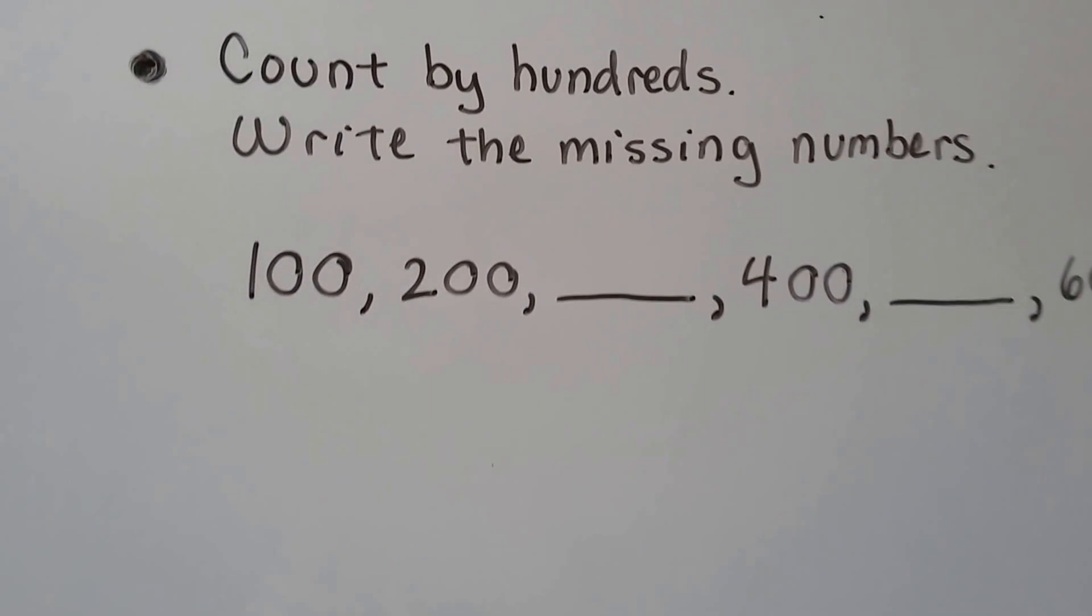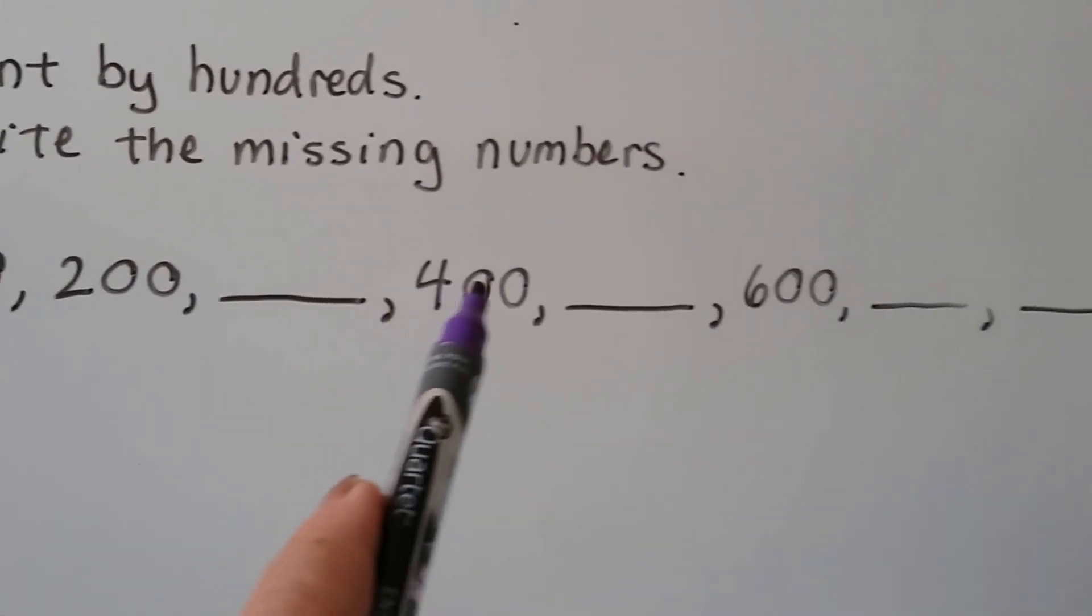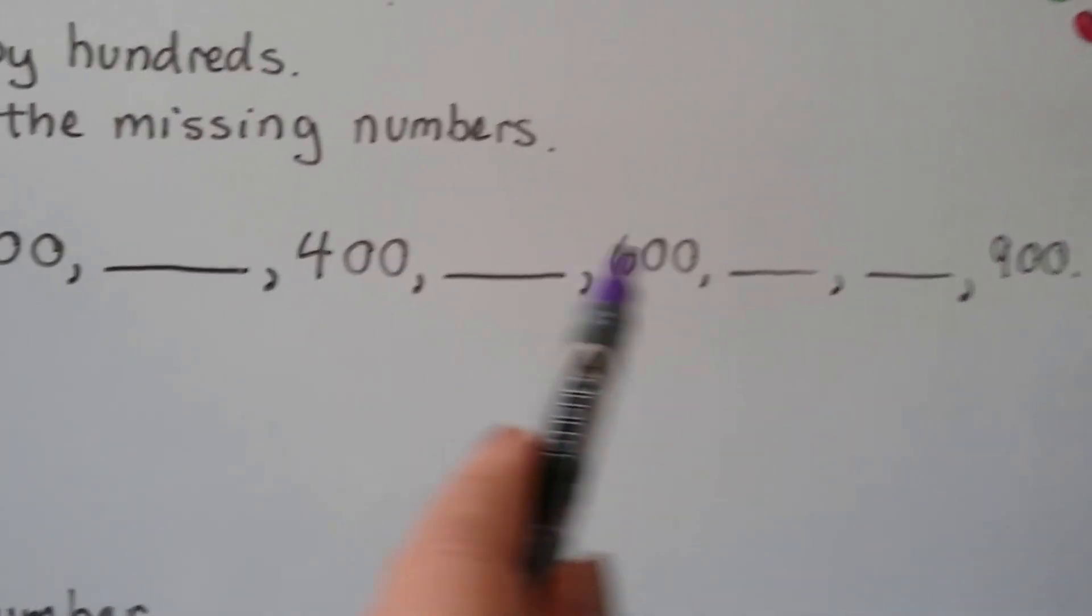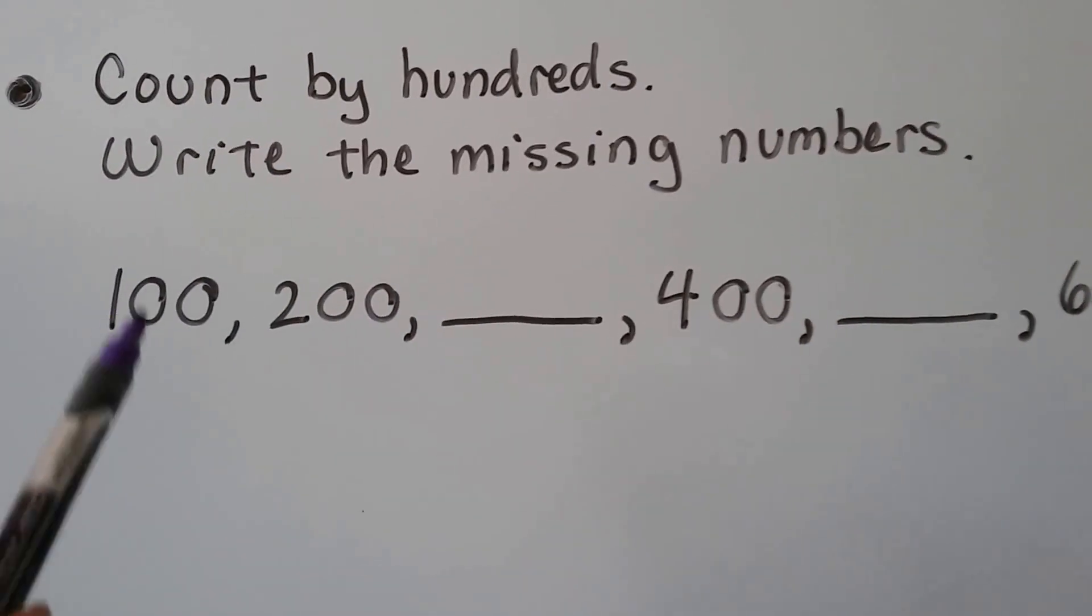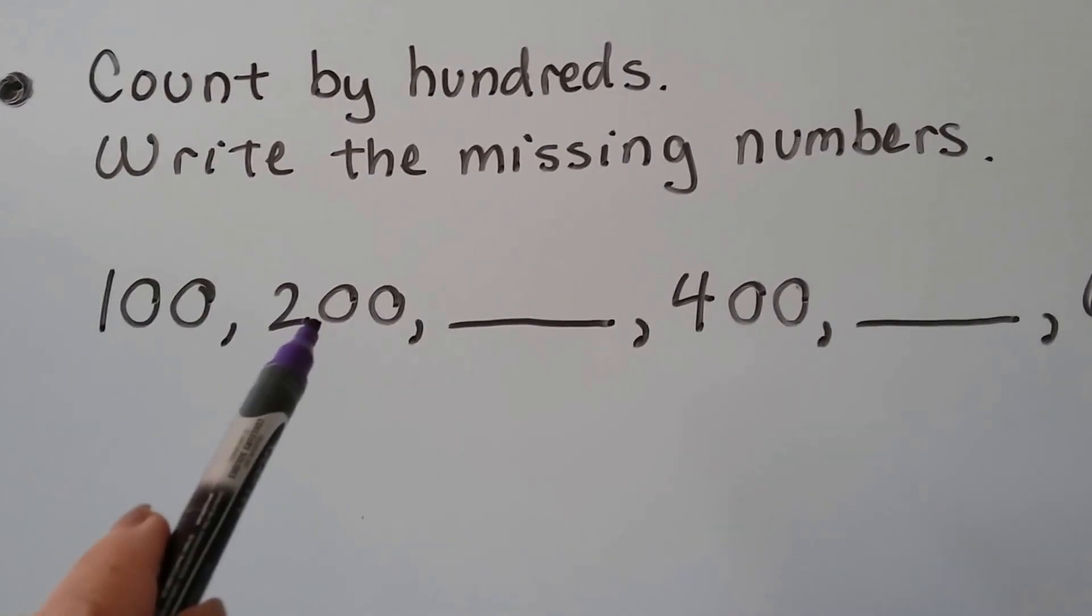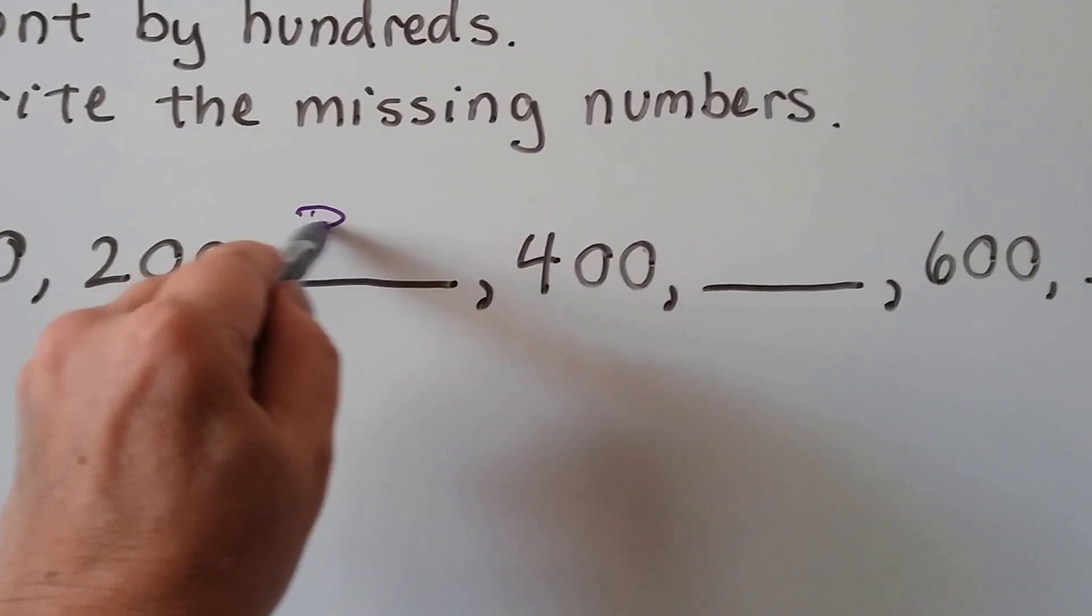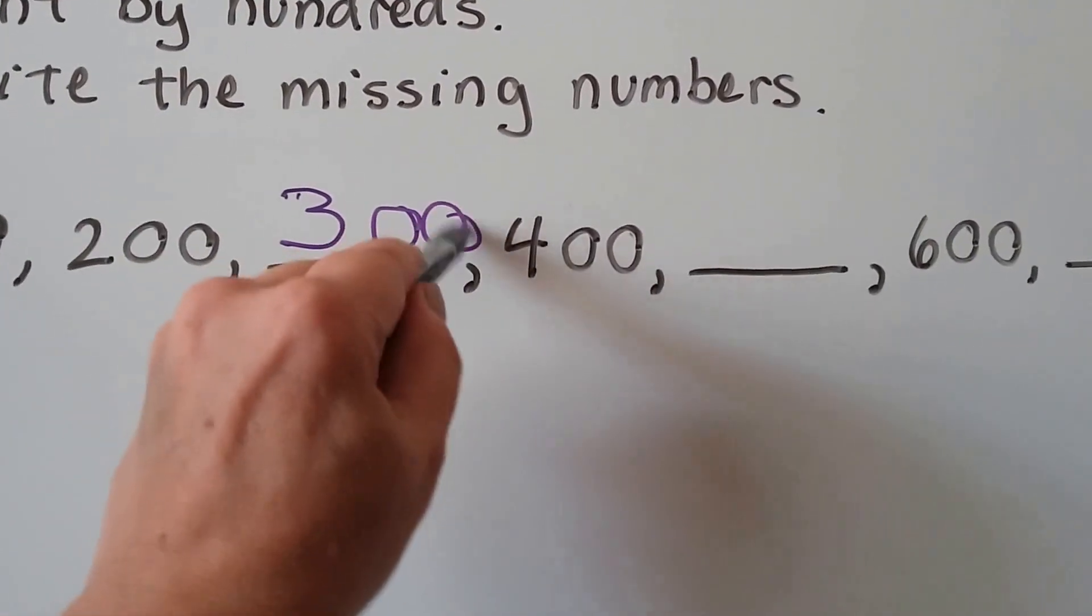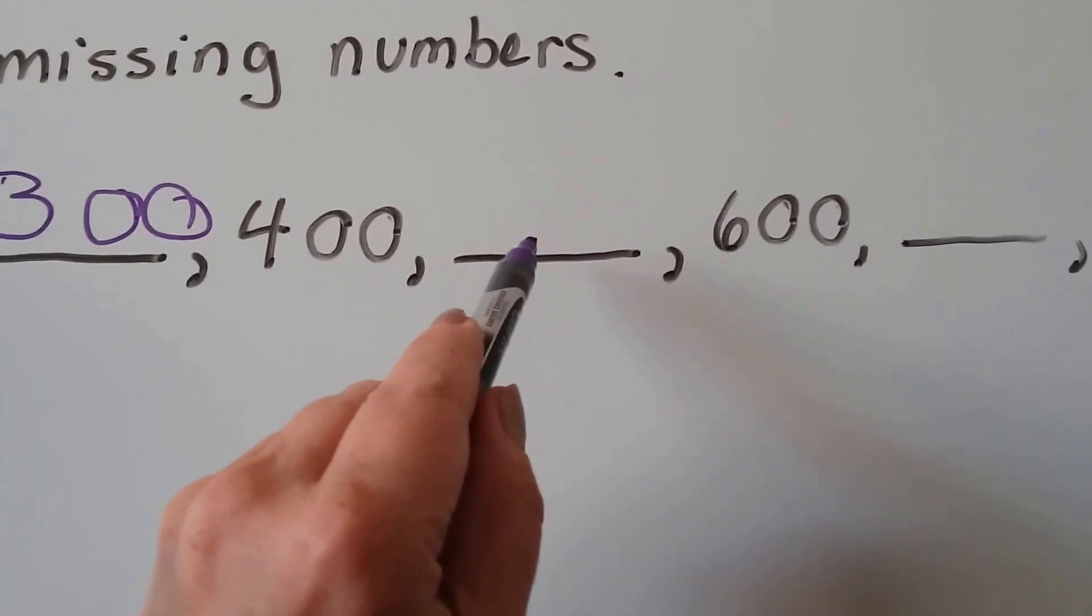Let's see if we can count by hundreds and write the missing numbers. So it's supposed to count by hundreds, but there's some numbers missing. So let's see if we could fill them in. We've got 100, 200. Do you know what comes next? 300, 400.